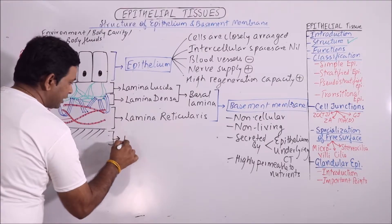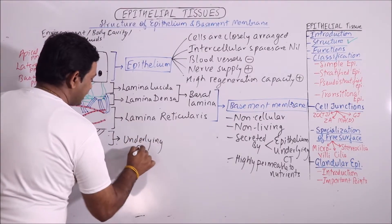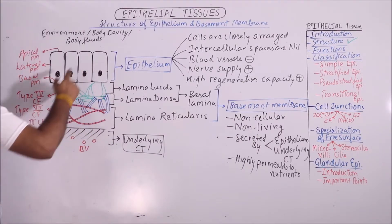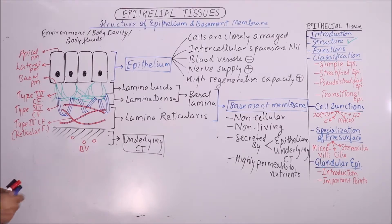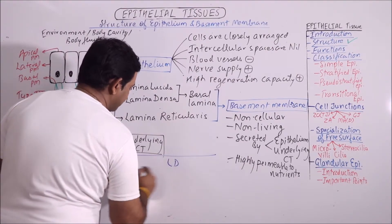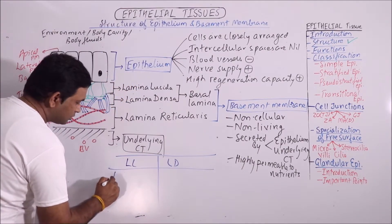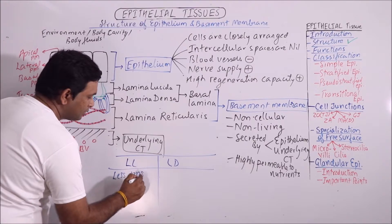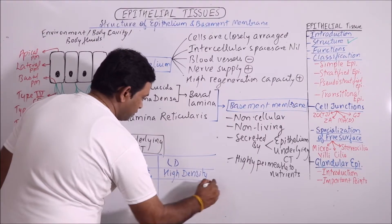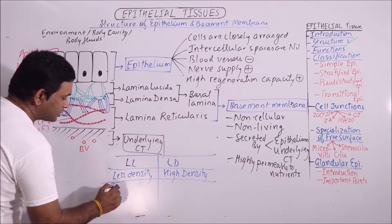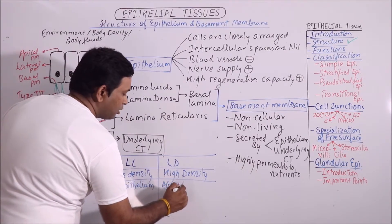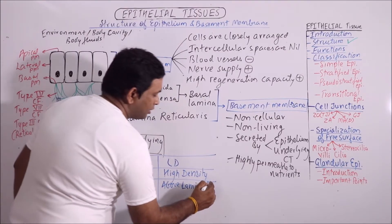The underlying connective tissue has the blood supply — these are the blood vessels — and nutrition reaches the epithelium by diffusion. Comparing the two layers, lamina lucida and lamina densa: lamina lucida has less density, while lamina densa has high density. Regarding location, lamina lucida is located just below the epithelium, while lamina densa is located above the lamina reticularis.